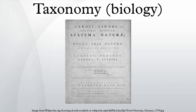With the advent of such fields of study as phylogenetics, cladistics, and systematics, the Linnaean system has progressed to a system of modern biological classification based on the evolutionary relationships between organisms, both living and extinct.